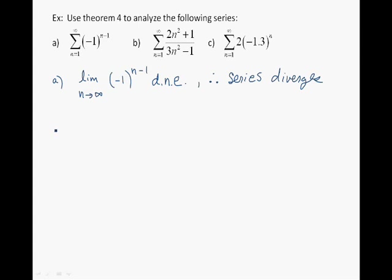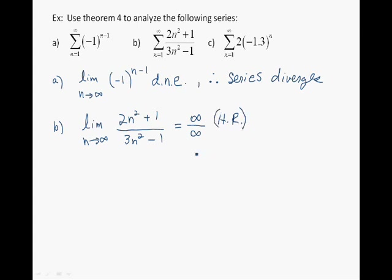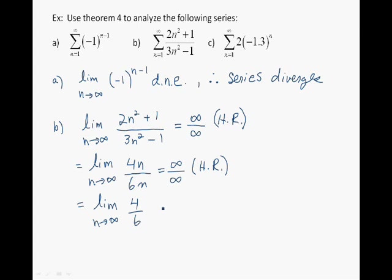For part b, we find the limit of the n-th term as n approaches infinity. This gives an indeterminate form of infinity over infinity, so L'Hôpital's rule applies. Taking the derivative of the numerator over the derivative of the denominator still gives infinity over infinity, so we apply L'Hôpital's rule a second time, which gives 4/6, or 2/3. Since the limit equals 2/3, which is not zero and is finite, all we can say is that the series may or may not converge.